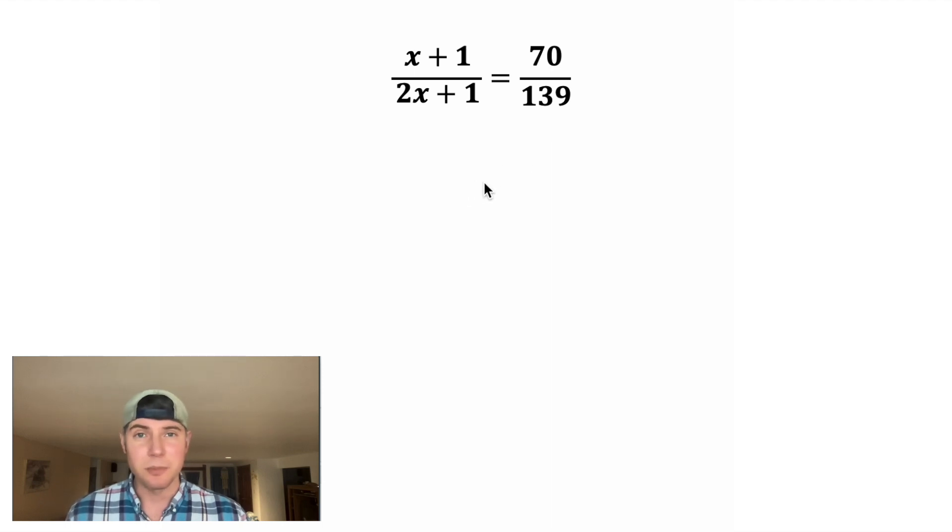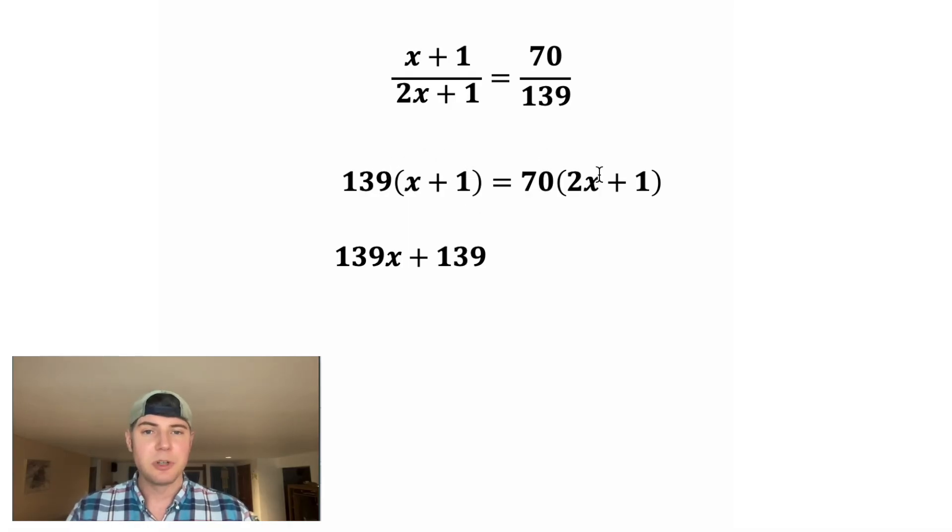In order to solve this proportion, let's cross multiply. We have the 139 times x plus 1 equals 70 times 2x plus 1. And then if we distribute, 139 times x is 139x. 139 times 1 is 139. 70 times 2x is 140x. And 70 times 1 is 70.